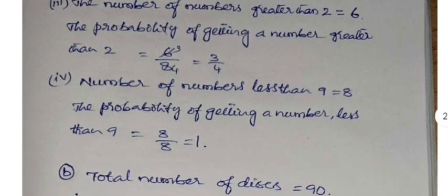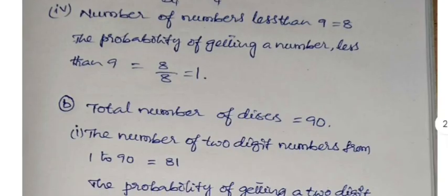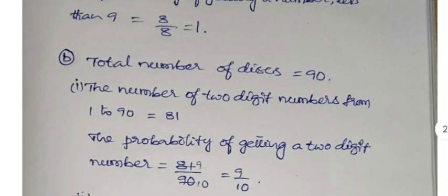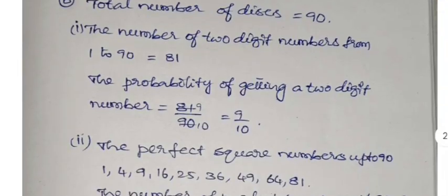The probability of getting a number greater than 2 is 6 by 8, that is 3 by 4. Part 4: Number of numbers less than 9 - all those eight numbers are less than 9, so the number of numbers less than 9 is 8. The probability of getting a number less than 9 is 8 by 8, that is 1. Answer 7: Total number of discs is equal to 90.